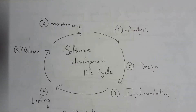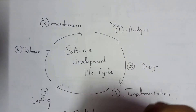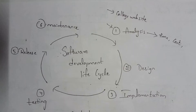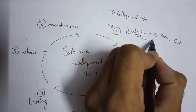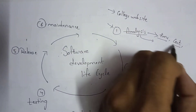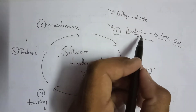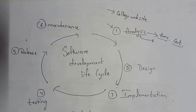There are six stages in the software development life cycle. The first stage is analysis. For example, when a client gives a project to design a college website, the analysis phase determines how much time and cost are required to complete the project. In this phase, we identify the time required, the cost involved, and the programming languages needed to complete the project.